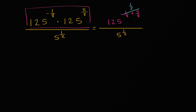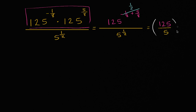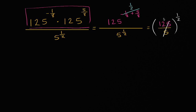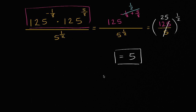That's going to be equivalent to 125 over 5, all to the 1/2 power. If I raise 125 to the 1/2 and divide by 5 to the 1/2, that's the same thing as doing the division first and then raising to the 1/2 power. 125 divided by 5 is 25, and 25 to the 1/2 is the principal square root of 25, which equals 5. That simplified quite nicely.